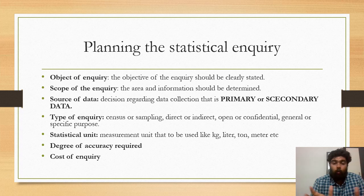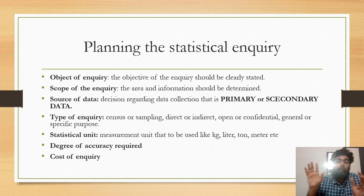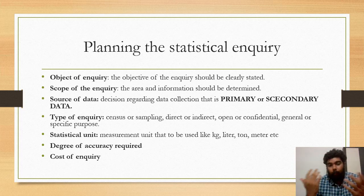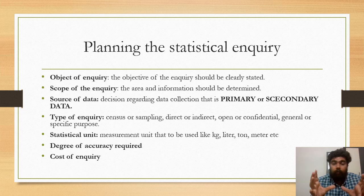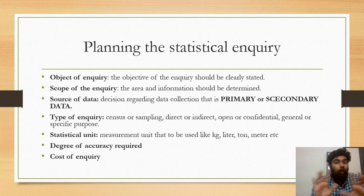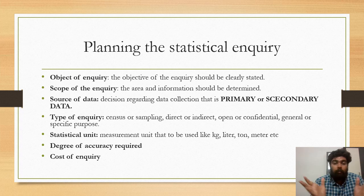Types of enquiry include census and sampling. Census covers the total population. The enquiry can also be direct or indirect — direct conversation and indirect conversation. The next distinction is open or confidential: open enquiries are those whose final output will be published, while confidential ones are specific. The last distinction is general or specific.